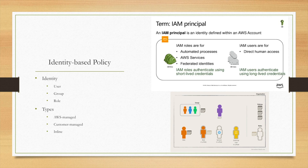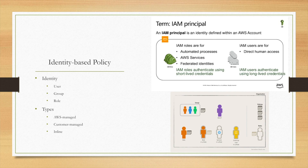The identity-based policy is used to grant IAM principals access to AWS resources. For IAM roles, they authenticate using short-lived credentials. For IAM users, they authenticate using long-lived credentials. So if you want to increase security, you should use IAM roles over IAM users. An IAM group is simply a set of IAM users, so that you can grant them the same privileges easily.